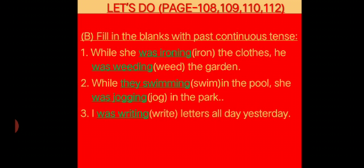Now it's exercise time. In part B you have to fill up with past continuous tense. While she dashed the clothes, he dashed the garden. While she was ironing the clothes, he was weeding the garden. While they swim in the pool, she jog in the park. While they were swimming in the pool, she was jogging. I dashed letters all day yesterday, I was writing.